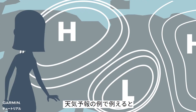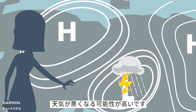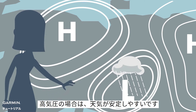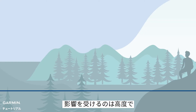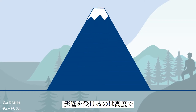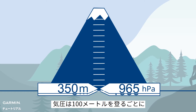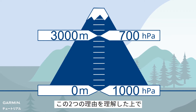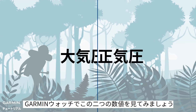If you have watched the weather forecast before, you will know that if the atmospheric pressure of a place is lower, the weather might become worse; if the atmospheric pressure is higher, the weather might be more stable. Besides weather, another factor that can affect atmospheric pressure is elevation — for every 100 meters of rise, the atmospheric pressure drops by about 10 hectopascals.